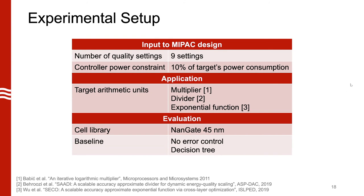For our experiments, we supported nine quality settings, whereas the original iterative circuit only supported five. We capped the power constraint of the controller at 10% of the target iterative circuit's power consumption. We looked at three applications: a logarithmic multiplier and two Taylor series approximations — a divider and an exponential function — evaluated on the NAND gate library. We had two baselines: a no-error-control baseline and a decision tree baseline.